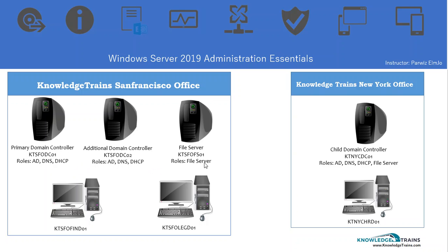The roles that we have are Active Directory, Domain Name System, and Dynamic Host Configuration Protocol for our IP addressing system, which we will be learning in detail. For our New York office, we have a child domain controller. Instead of making it an additional domain controller, I added a child domain controller so that we can test another scenario.